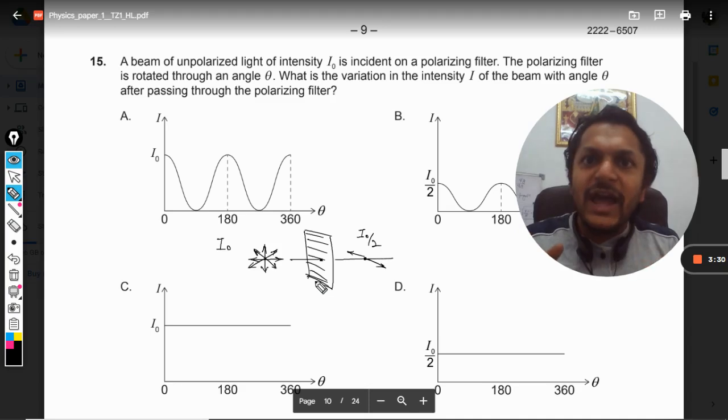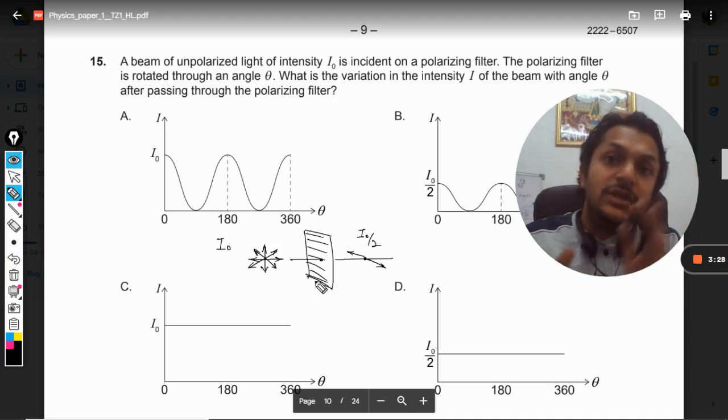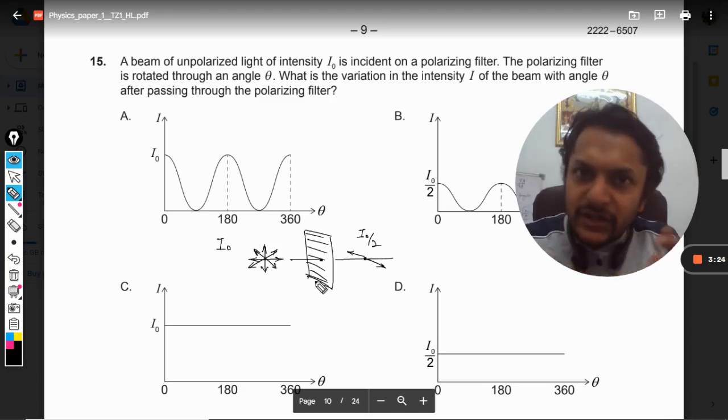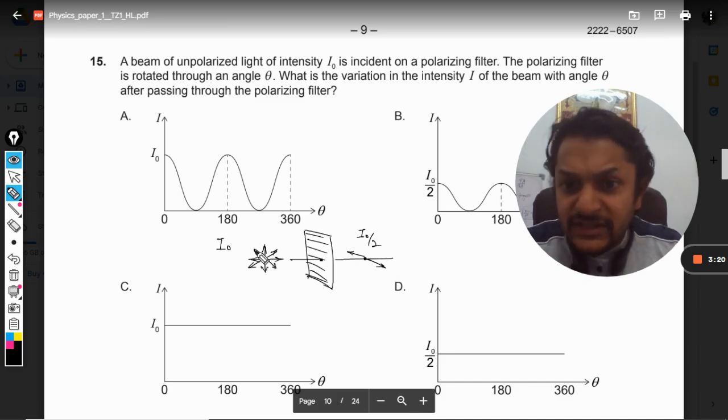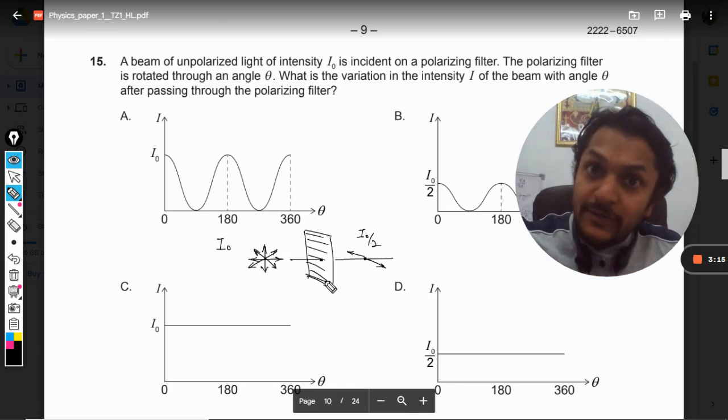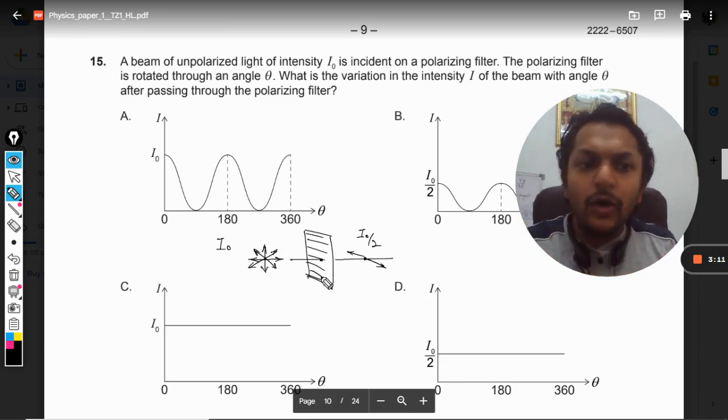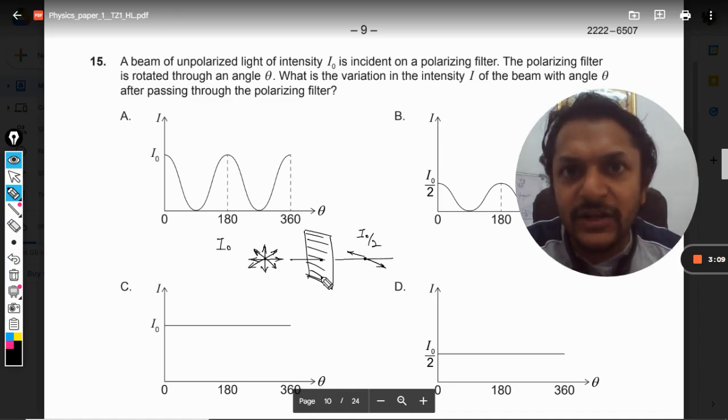If there is an angle between this intensity vector and the axis of the polaroid, there will be two components: sine θ and cosine θ. Only cosine will be permitted and sine will not be. Overall, if you are not understanding the explanation, just remember this: if there is one polaroid or the first polaroid, the light is unpolarized and then becomes polarized, so the intensity becomes I₀/2.